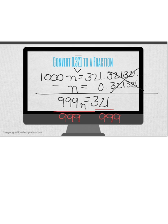When I do that, 999 divided by 999 leaves me with 1n on the left side of my equal sign. And then on the right, I have my fraction.